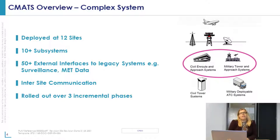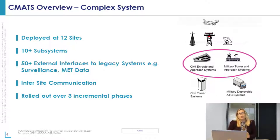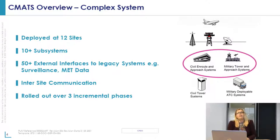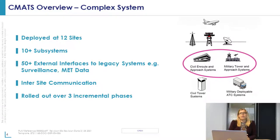There are over 50 external interfaces to CMATS — some are legacy interfaces and some are new, for things such as surveillance from radar systems and meteorological data. Between those 12 sites, data is shared and synchronised to support that flexible airspace. CMATS is also going to be rolled out over three incremental phases, with new subsystems, new functionality and new interfaces introduced at each phase.